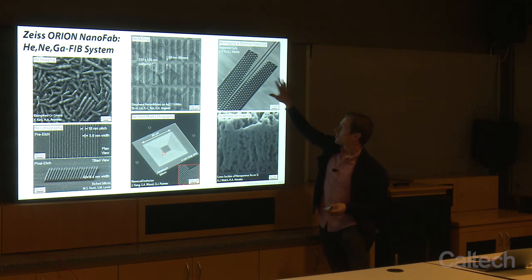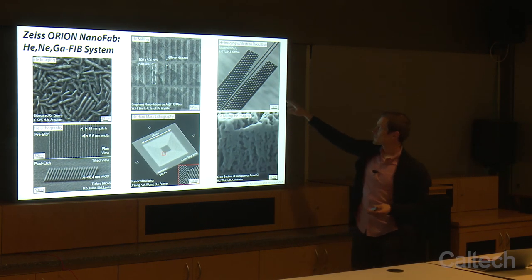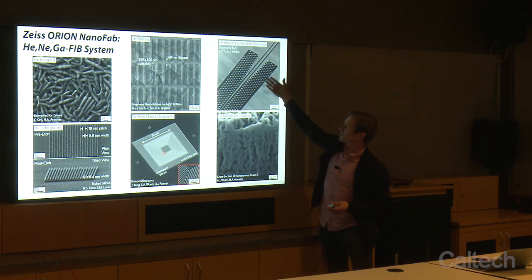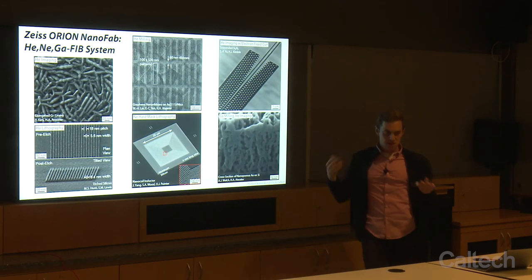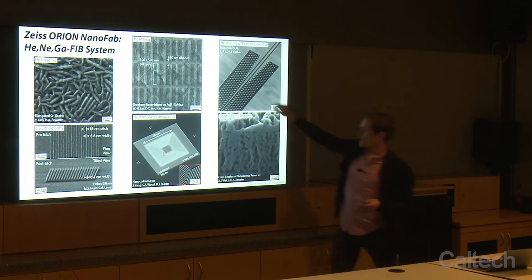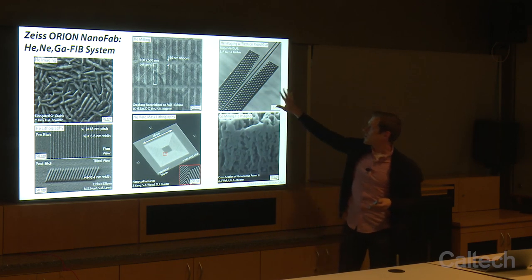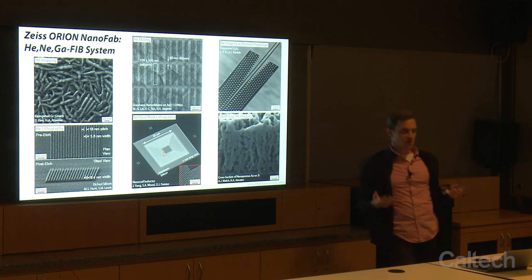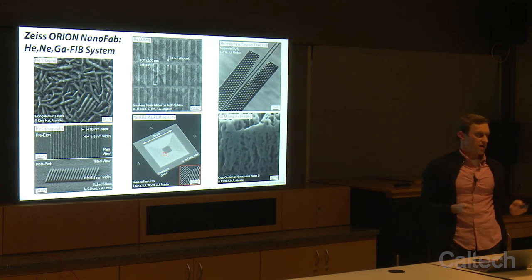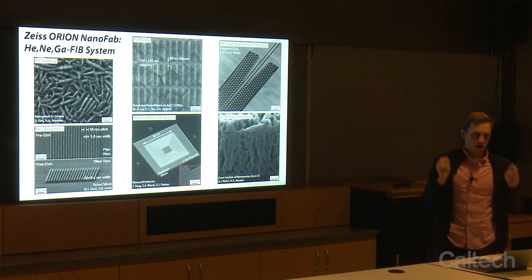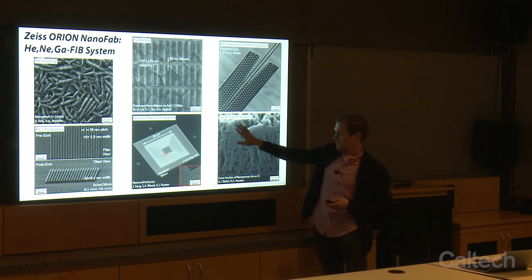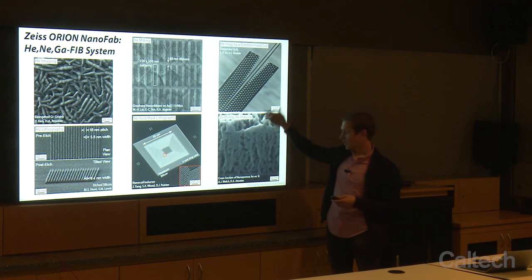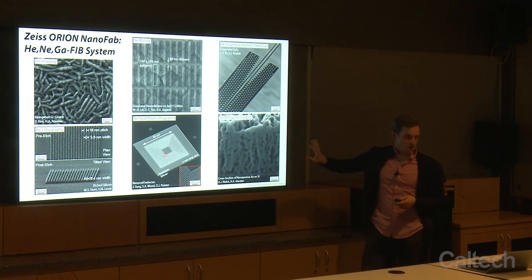We can do helium imaging of highly non-conductive specimens. Here's a suspended silicon nitride waveguide — it's insulating and suspended. I'll show an example later of how we use the electron flood gun to balance the otherwise accumulating positive charge of the incident helium ion beam. We also have a gallium focused ion beam on the system, so we can cut cross sections and then get really nice images using the helium beam.